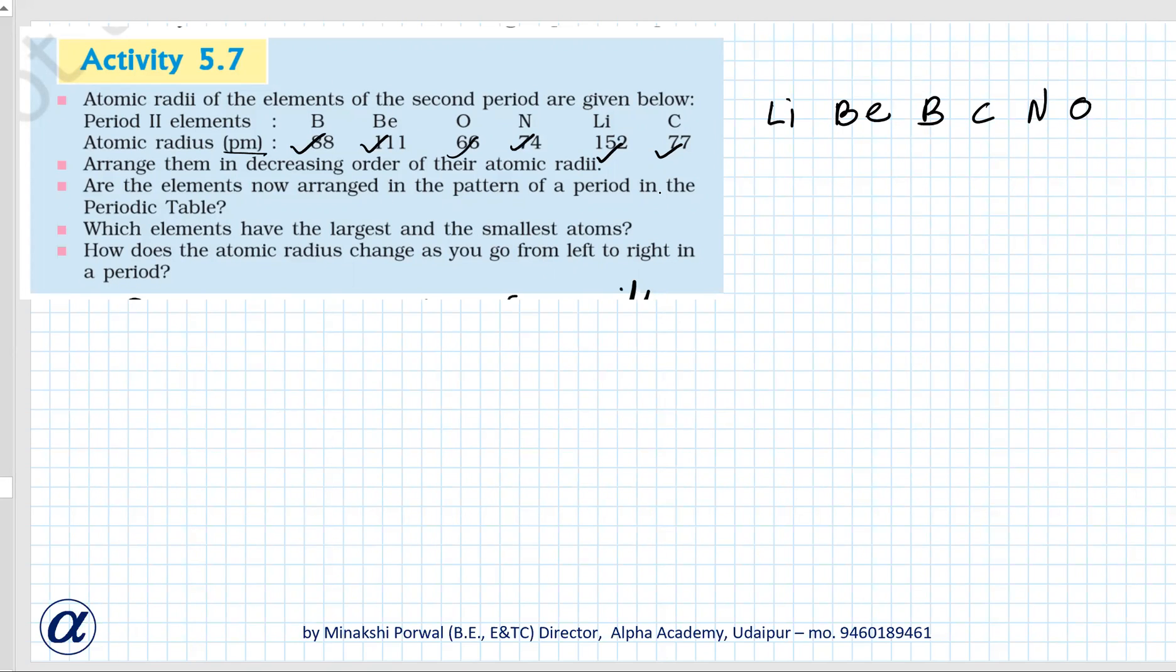The elements are now arranged in the pattern of a period in the periodic table. Which element has the largest and smallest atom? Lithium has the largest atom and oxygen is the smallest atom.